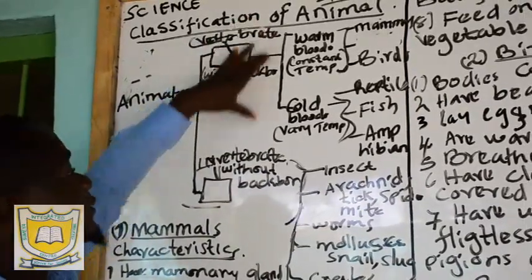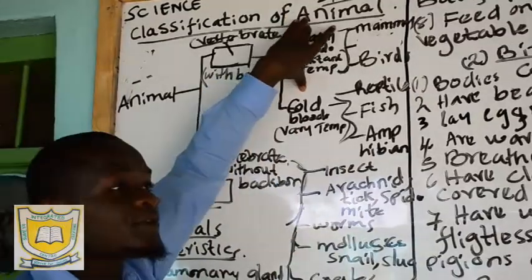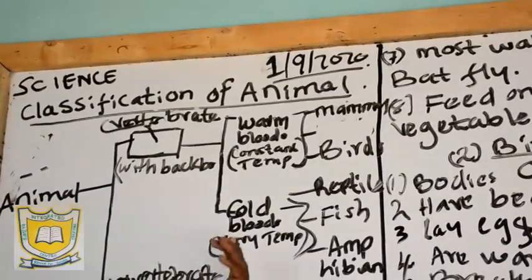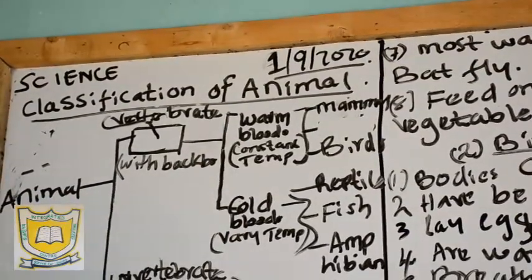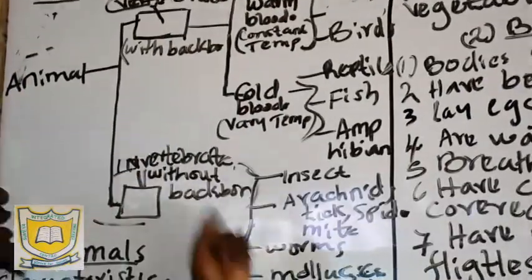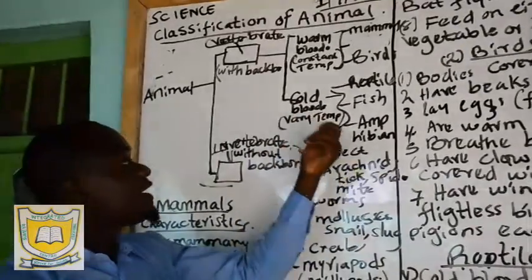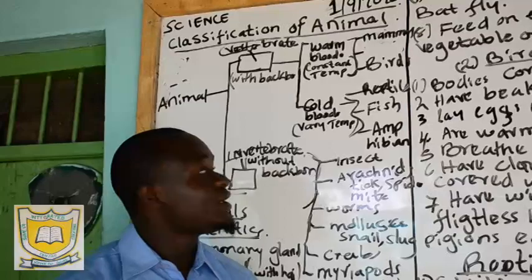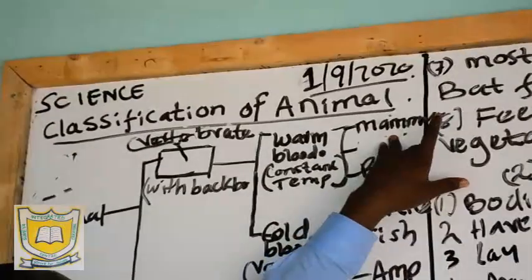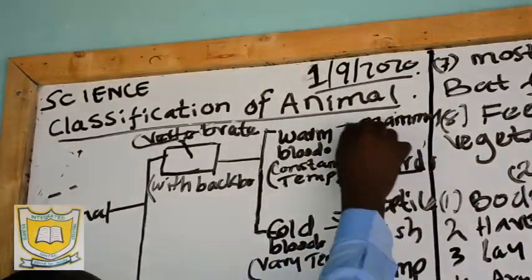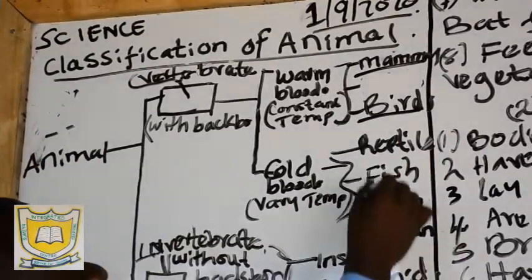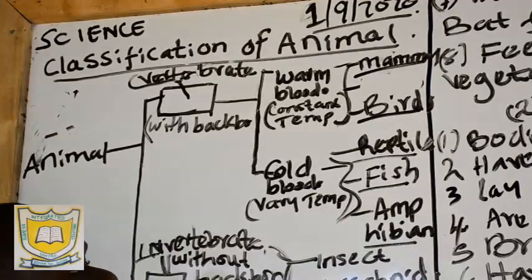After classifying animals as vertebrates and invertebrates, we now consider the types of vertebrates. Vertebrates can be either warm-blooded or cold-blooded. Warm-blooded animals are animals that have a constant body temperature, while cold-blooded animals are animals with varying body temperature. Examples of warm-blooded animals are mammals and birds. Examples of cold-blooded are reptiles, fish, and amphibians.